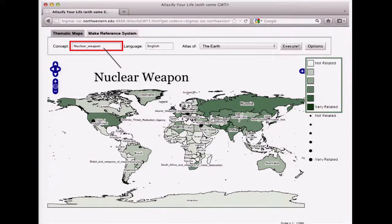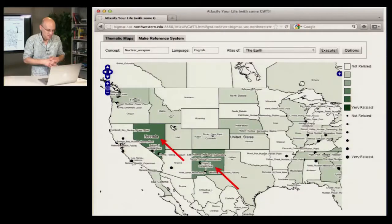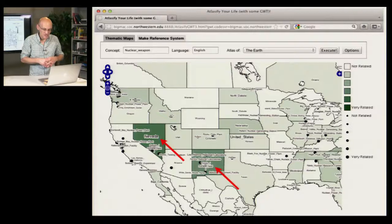Now you can see that in contrast to the Google Maps result we saw earlier, current events are strongly incorporated, as is the geographic history of nuclear weapons. You can zoom in and zoom out like any modern geographic technology, and we can see that as we might expect, Nevada and New Mexico are both indicated to be highly related to nuclear weapons.